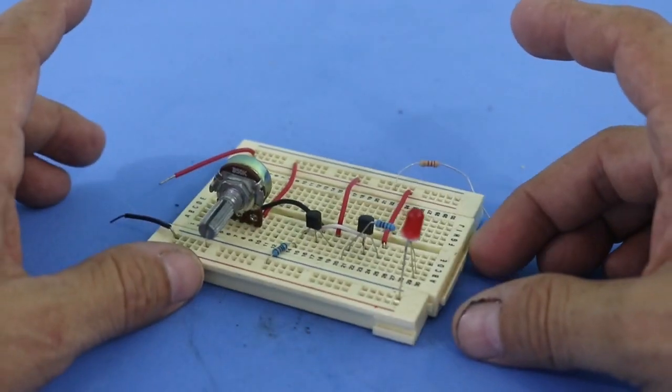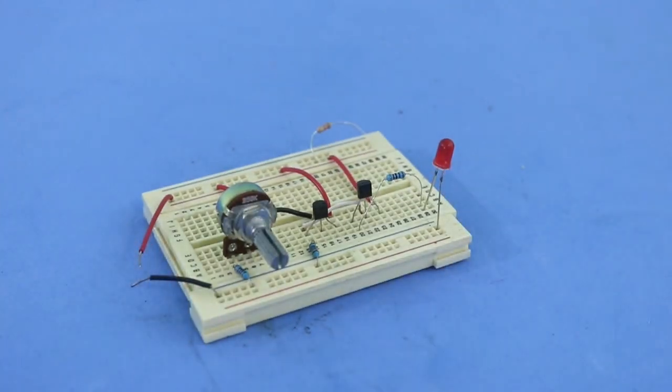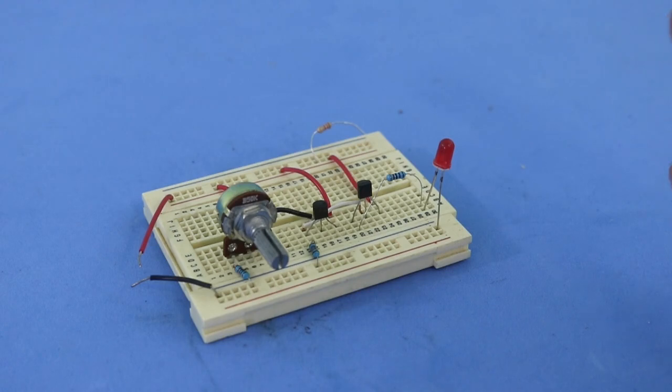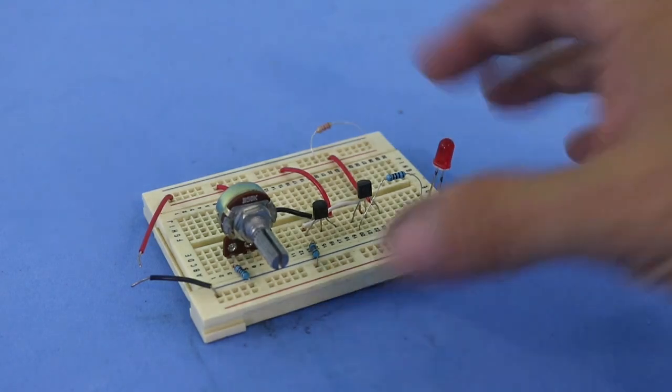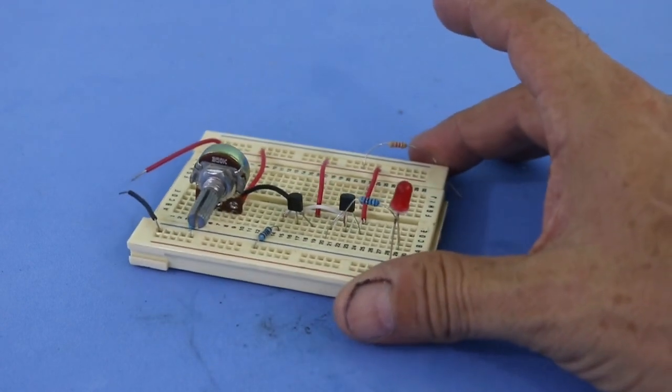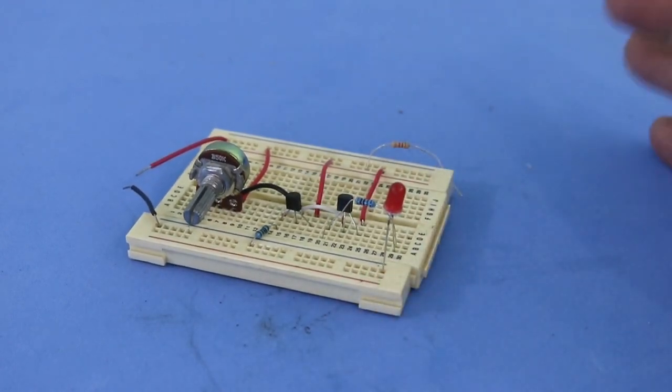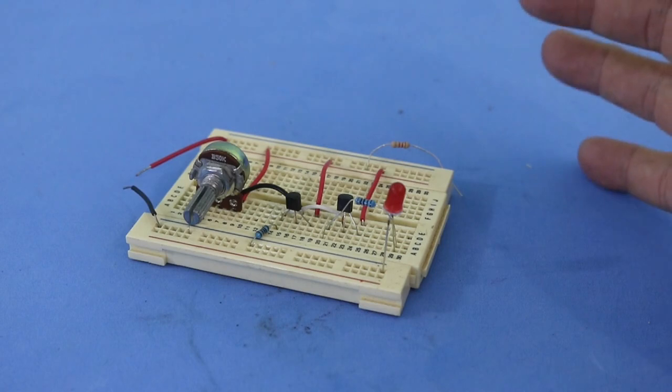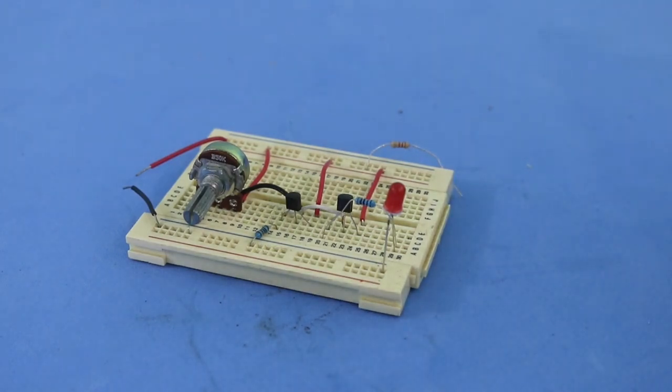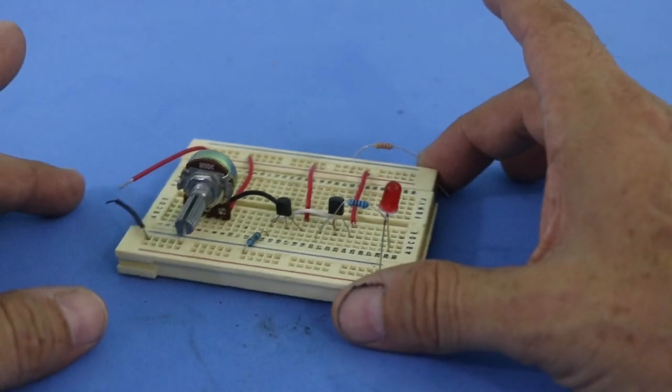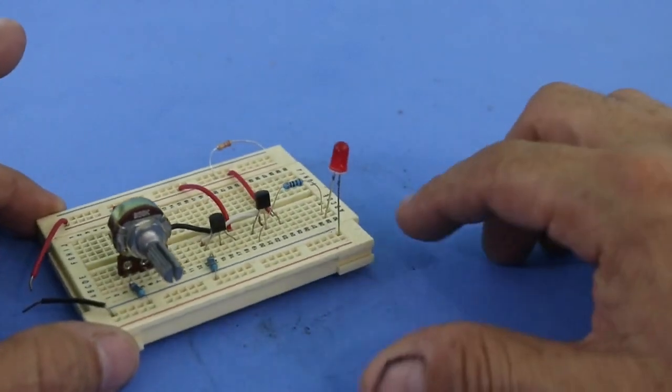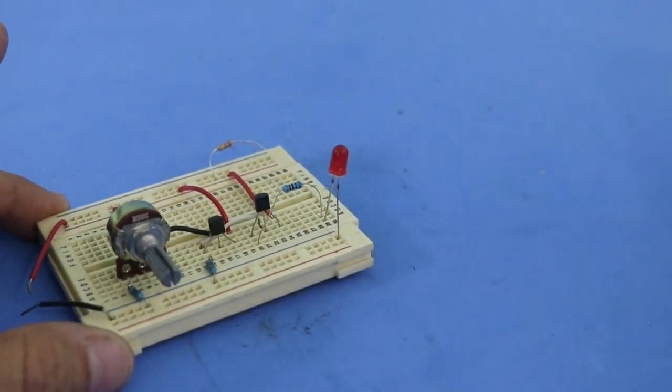The circuit is very useful for example when you are charging batteries to indicate when the voltage of the battery has reached a certain point where the battery is full, or on the other hand it can also show you when the battery has a very low voltage and it is almost empty, among other applications where you need to monitor voltage and obtain a visual indication.